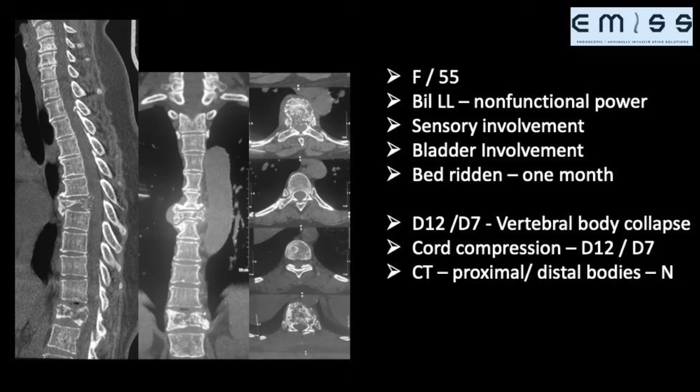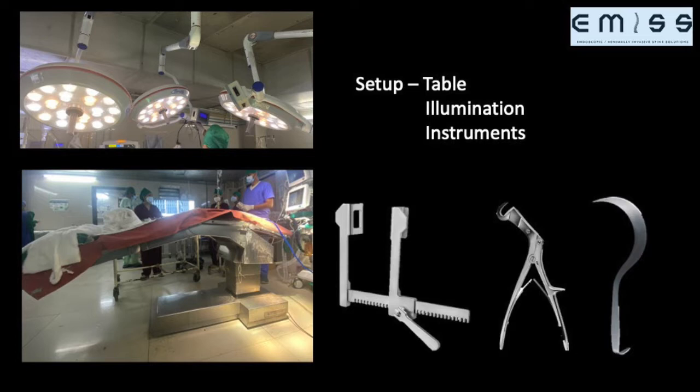In the transthoracic approach there are certain prerequisites which can make your life easier. The most important is the table, which should allow a good amount of break so that you can open up the side you are operating on. Good illumination is very important to see structures deep in the thoracic cavity, and you need instruments like self-retaining chest wall spreaders, rib cutters, and a good deaver retractor to retract the lung and soft tissues, especially the diaphragm at the lower level.